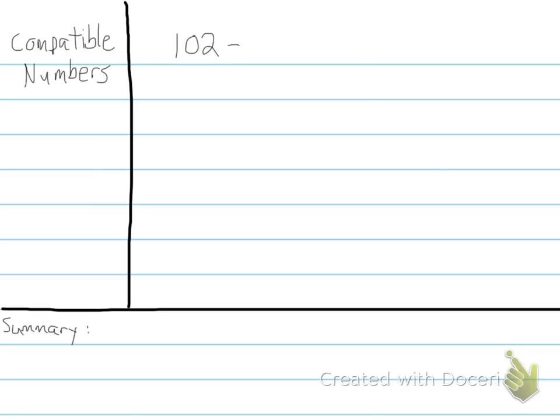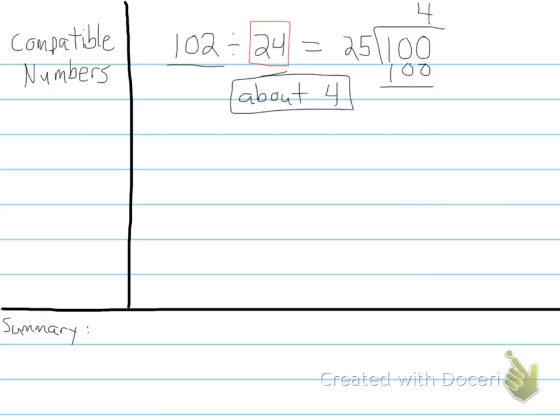An example of this would be if we had 102 divided by 24. Which numbers, what numbers close to 102 that would be a compatible number? We're going to go with, it's close to 100, right? So that would go in the house. Remember, last man standing stays outside. Now 24, what compatible number would be close to 24? Say 25. So if we did 100 divided by 25, we know that 4, 25 times 4 goes into 100. That would mean 102 divided by 24 is about 4. So our estimation of that would be about 4.